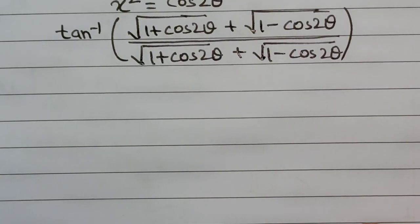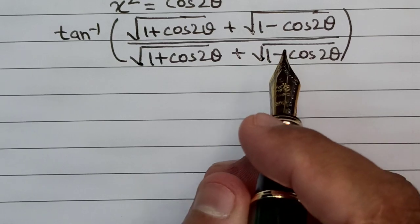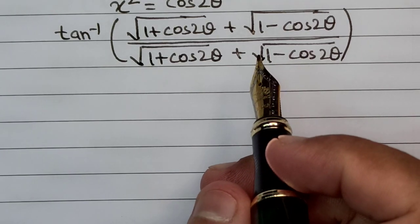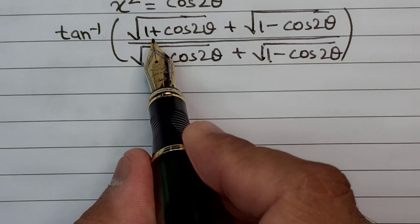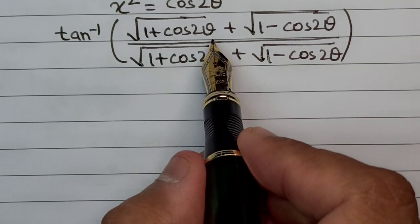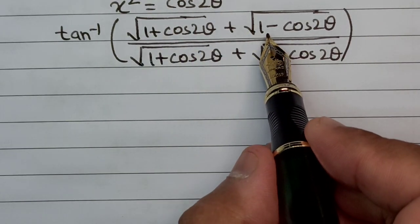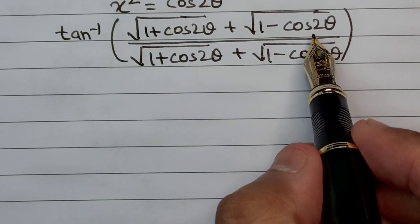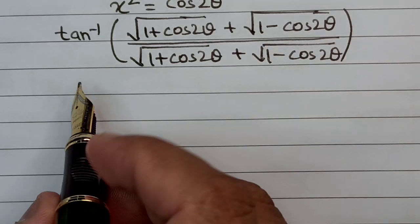This problem has now shifted to a more familiar area. We know that 1 + cos 2θ = 2cos²θ and 1 − cos 2θ = 2sin²θ.